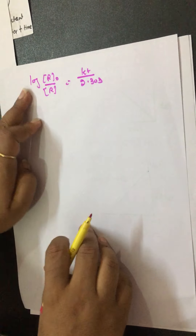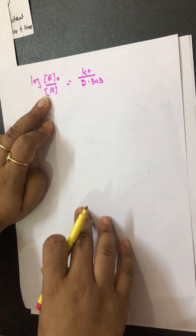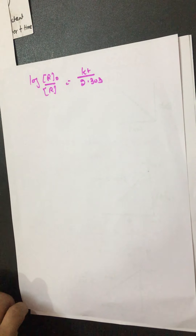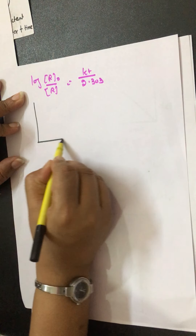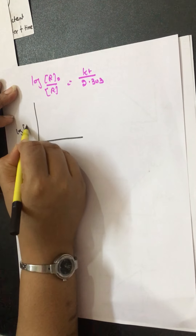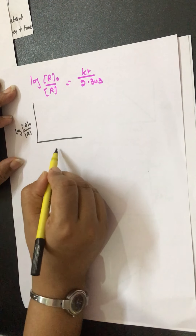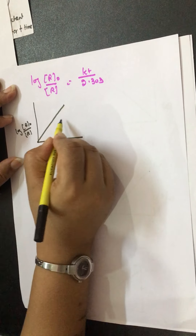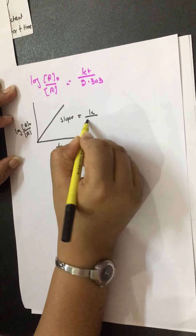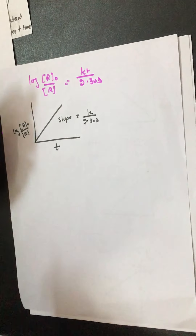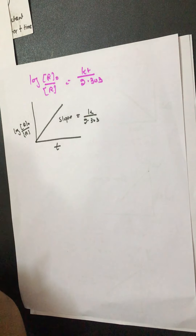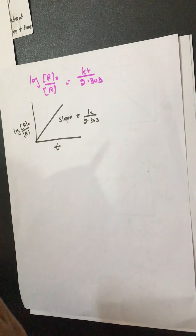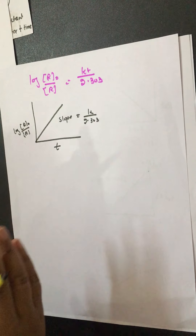One more formula: log₁₀ R₀ over R equals kt over 2.303, or ln R₀ over R equals kt. If we plot log R₀/R vs. t, it is a straight line with slope equals k over 2.303. All students should be able to plot any graph from the integrated rate law formula for first order reactions.